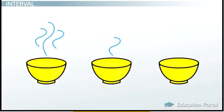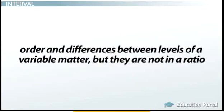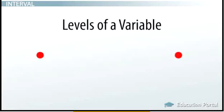Okay, but what if we want to measure something where the differences between the numbers do matter? For example, what if we decide that the temperature of a person's breakfast matters? We believe that the kid who eats the hottest breakfast will do best on the math test, and the kid who eats the coldest breakfast will do the worst. When the order and differences between the levels of a variable matter, but they are not in a ratio, it is measured on an interval scale. Intervals are the distance between two things, so you can remember this because we are looking at the distance between levels of a variable.